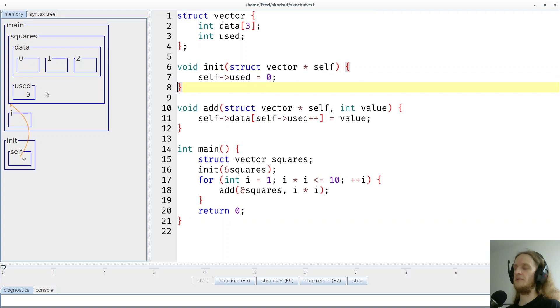Now we have a for loop. The purpose of this loop is to fill the vector with all the squares up to and including 10, which shouldn't be too many. So let's see. The first time we call it, again we pass a pointer to squares, so self will point to squares. You can see it, self points to squares.